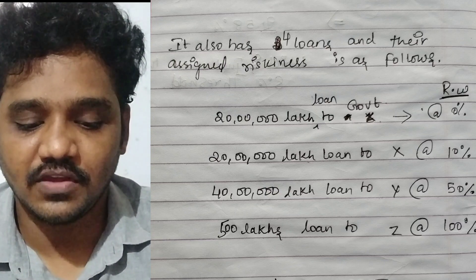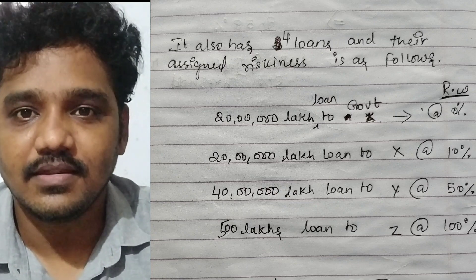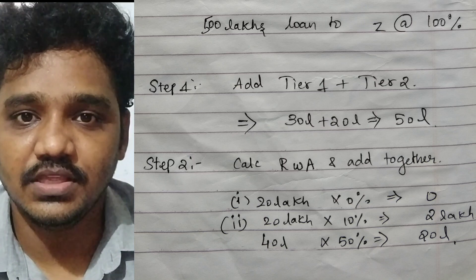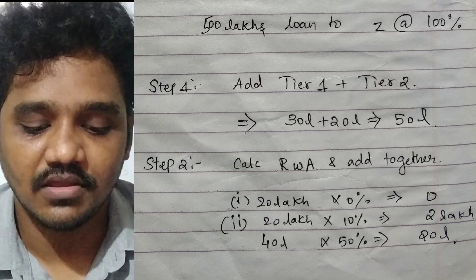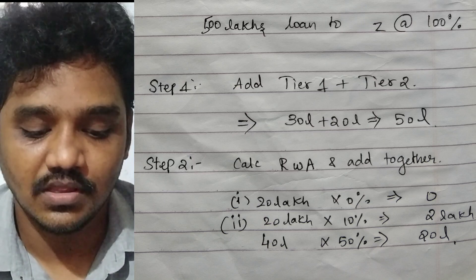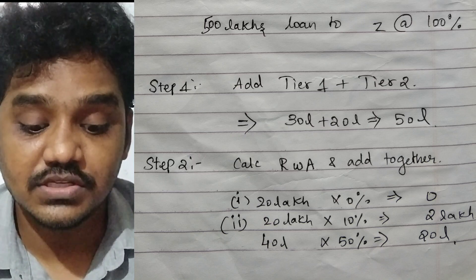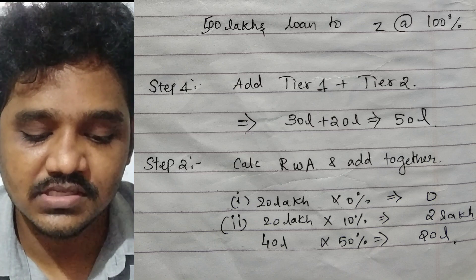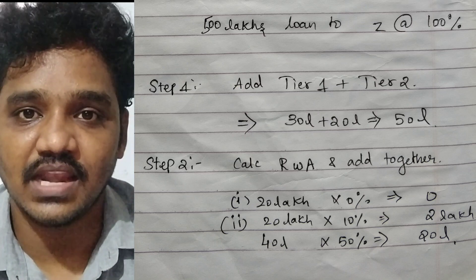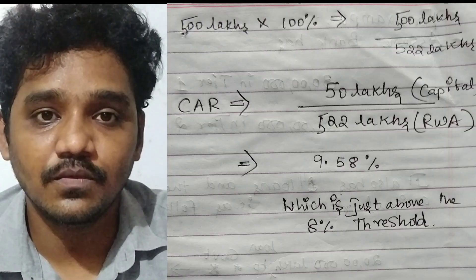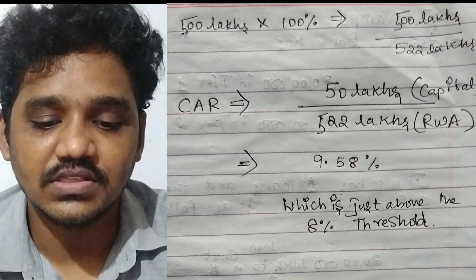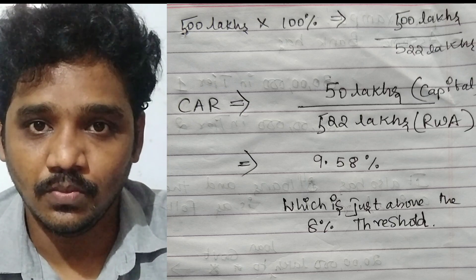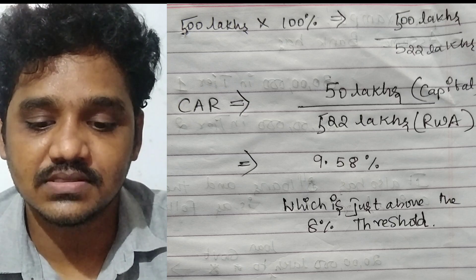Step 1: Add Tier 1 plus Tier 2 capital — 30 lakhs plus 20 lakhs — giving total capital of 50 lakhs. That's the numerator. Now for the denominator, the risk-weighted assets: first category 20 lakhs at 0% = 0; second category 20 lakhs at 10%; third category 40 lakhs at 50%; last category 500 lakhs at 100%. Accumulating everything gives 522 lakhs as the total risk-weighted assets. So Capital Adequacy Ratio equals 50 lakhs divided by 522 lakhs.